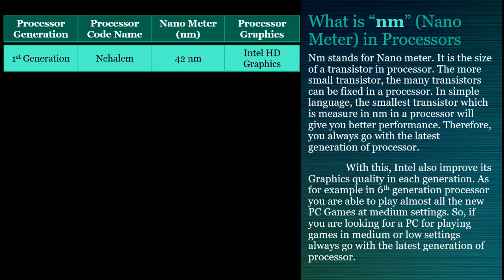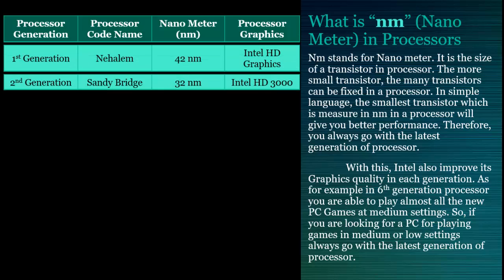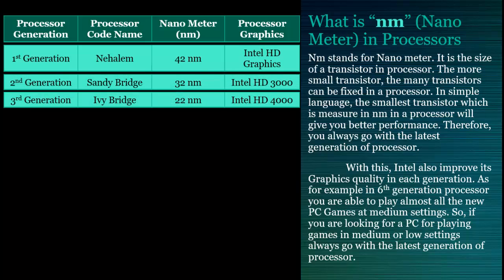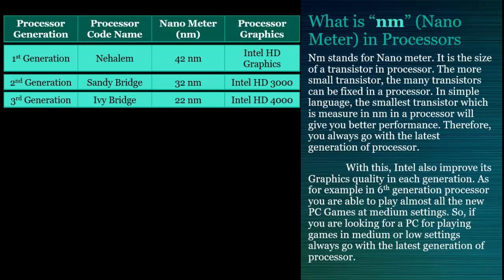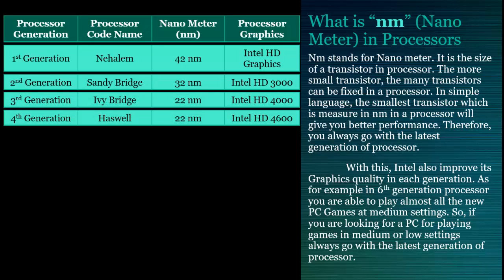The first generation processor's codename is Nehalem and it is a 42 NM processor with an Intel HD graphics chip. The second generation processor's codename is Sandy Bridge, a 32 NM processor with Intel HD 3000 graphics. The third generation, also called Ivy Bridge, is a 22 NM processor with Intel HD 4000 graphics. The fourth generation processor is called Haswell and is also a 22 NM processor, but with a graphics chip difference — it comes with Intel HD 4600 graphics.